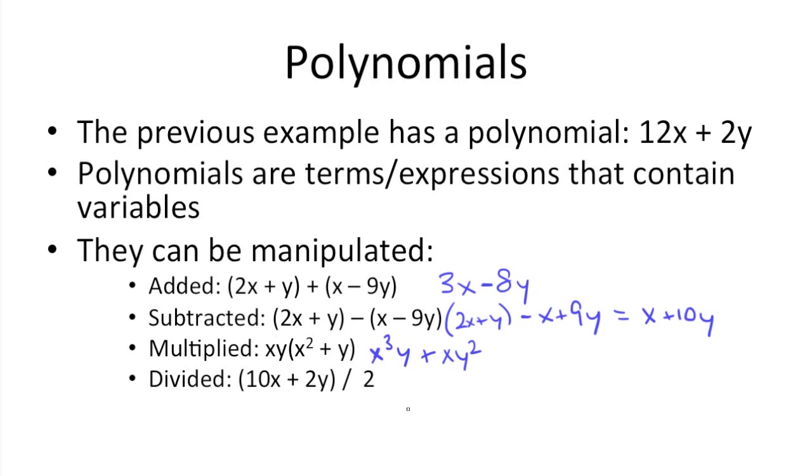And last off, you can divide them. 10x plus 2y divided by 2. And just simplify these out. 2 goes into 10, 5. 2 goes into 2 once. You get left with 5x plus y.